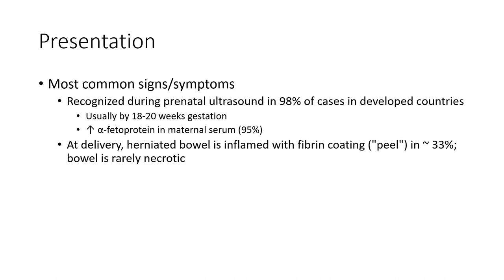Most cases are recognized during prenatal ultrasound in 98% of cases in developed countries, usually by 18 to 20 weeks gestation. There is increased alpha-fetoprotein in maternal serum in 95% of cases. At delivery, the herniated bowel is inflamed with fibrin coating, and in 33% of cases the bowel is frankly necrotic.